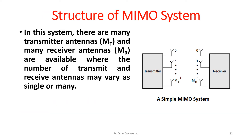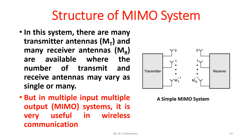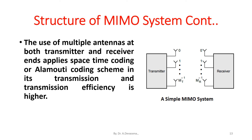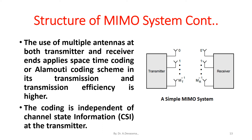In a MIMO system there are many transmitter antennas and many receiver antennas available. The number of transmit and receive antennas may vary as single or many, but in multiple input multiple output systems it is very useful in wireless communication. The use of multiple antennas at both transmitter and receiver ends applies space-time coding or Alamouti coding scheme in its transmission, and the transmission efficiency is higher. The coding is independent of channel state information at the transmitter.